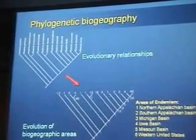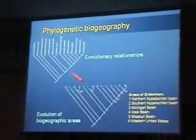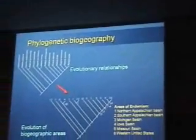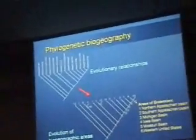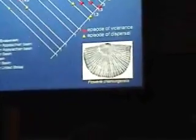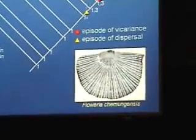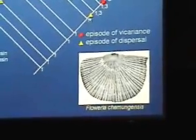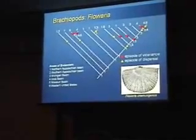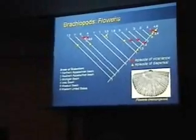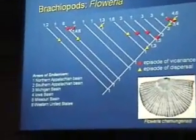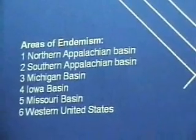We can take our evolutionary relationships and replace the species names with the regions the species lived in. This tells us the ancestor lived in the Michigan Basin, but this descendant lived in the Michigan Basin plus the Iowa Basin — so there was a range expansion. If we map these through time, we can see episodes of dispersal, shown as yellow diamonds, where you have a species in one region but its ancestor lives in additional regions. We can also see vicariance — when you had a broadly distributed ancestor occupying three regions but the descendant only lives in one or fewer.